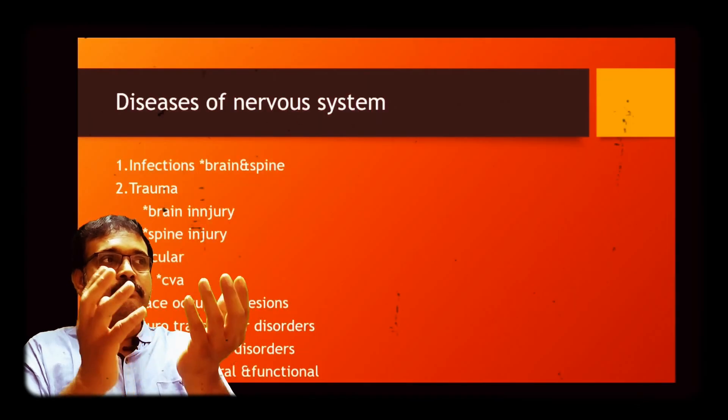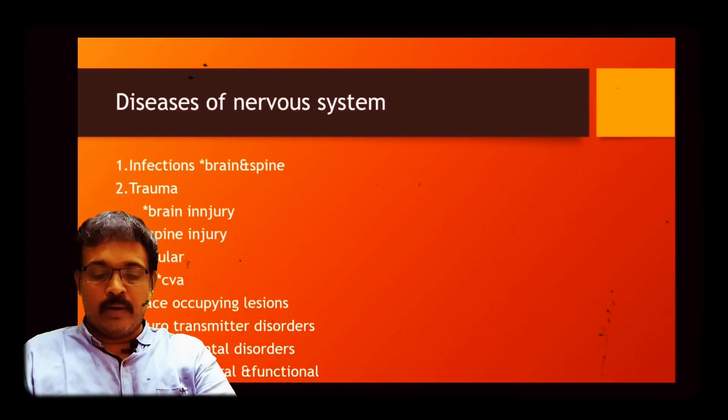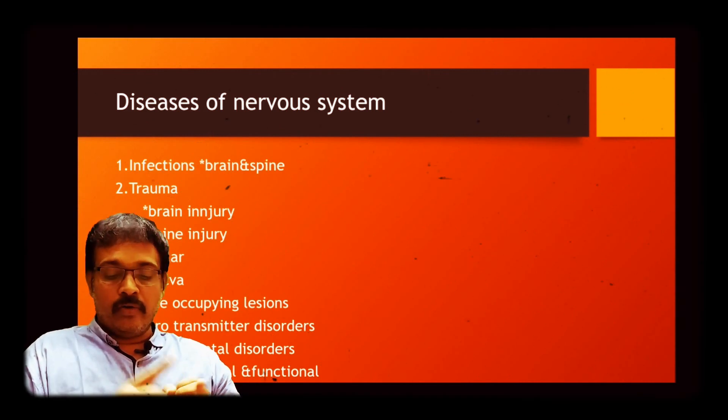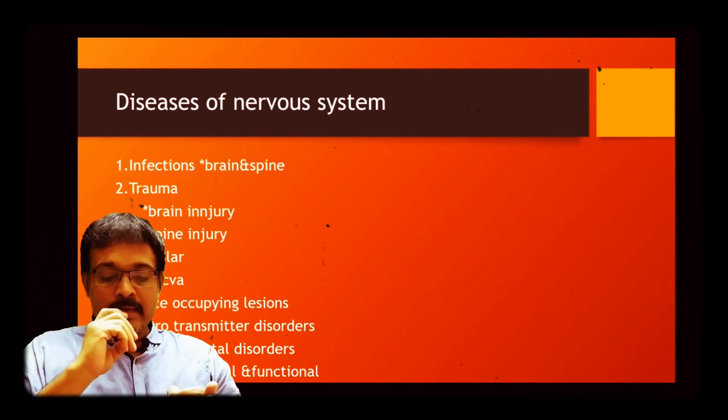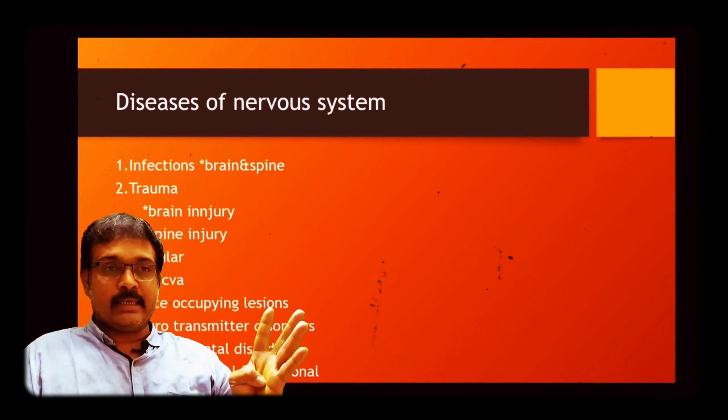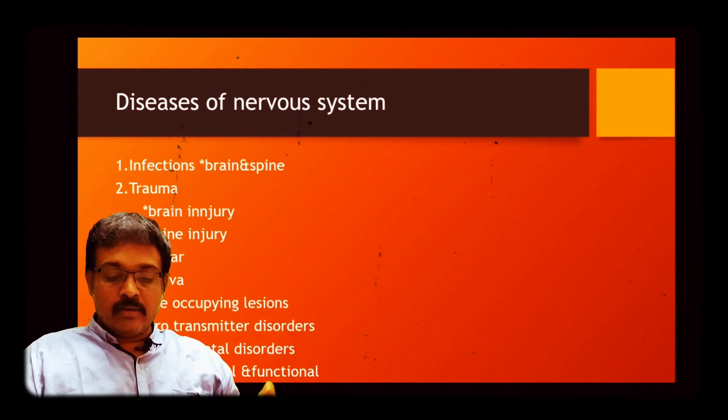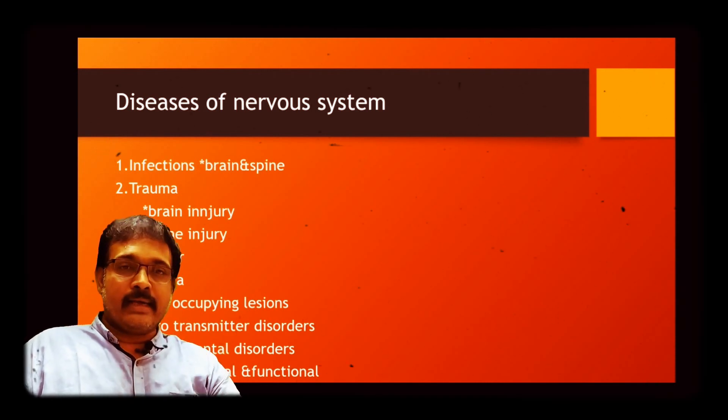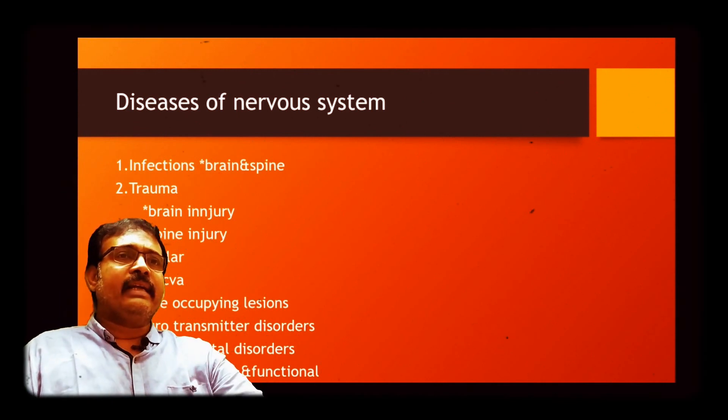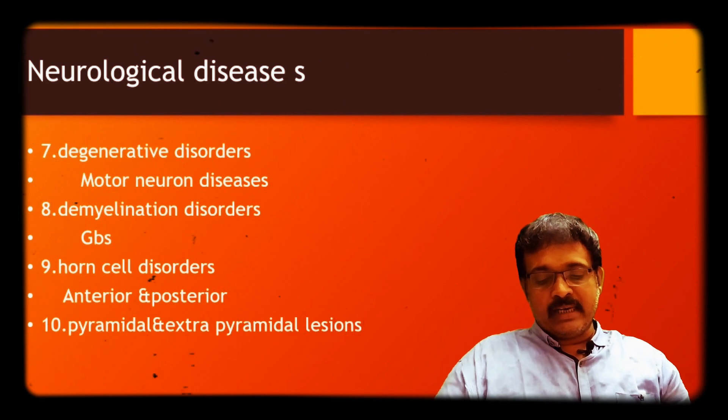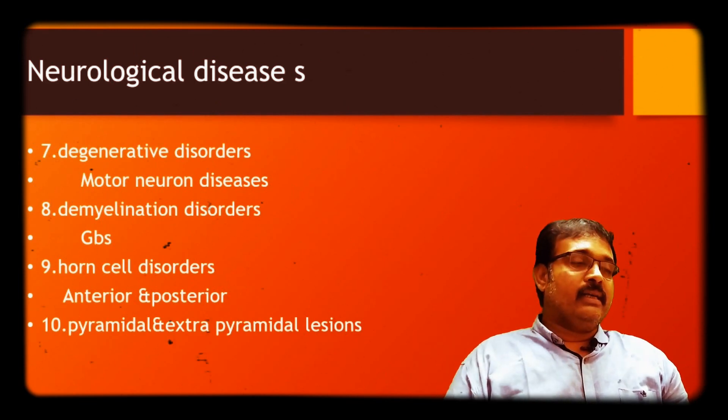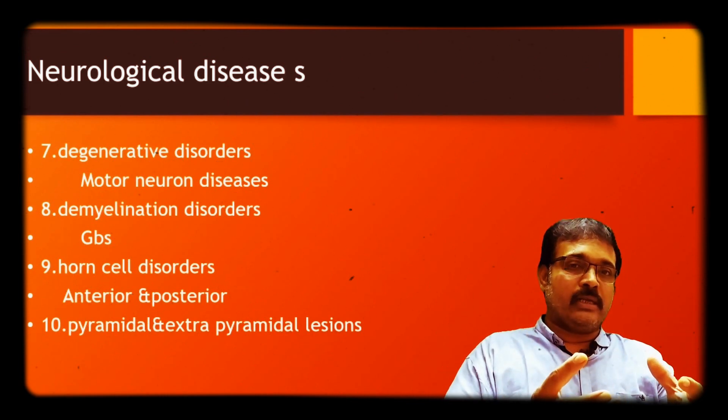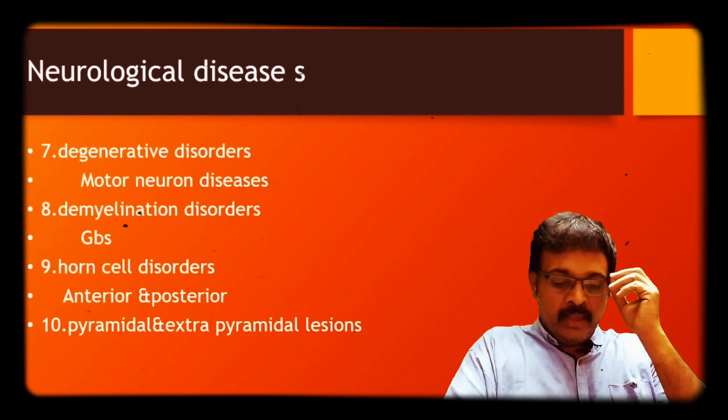What is my aim? I categorized the neurological disorders into 10 categories. First, infections of the nervous system - it may be the brain or spine. Second is trauma, injury to the brain or spine. Third is vascular, called cerebrovascular accident. Fourth is space-occupying lesions. Fifth is neurotransmitter disorders. Sixth is degenerative disorder. Seventh is demyelinating disorder. Degenerative disorder example is motor neurone disease. Demyelinating disorder example is Guillian-Barré syndrome. And developmental disorder is classified into two: one is structural, another is functional developmental disorder. What is the posterior horn cell and anterior horn cell? Posterior horn cell disorder is tabes dorsalis and syphilis, which is a spirochetal organism that produces affinity in the posterior horn cells. Anterior horn cell disorder is poliomyelitis.